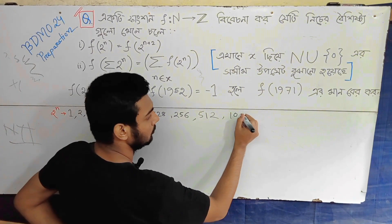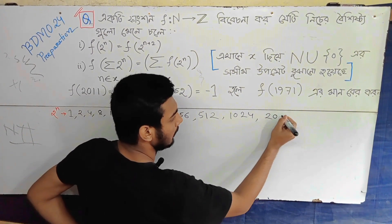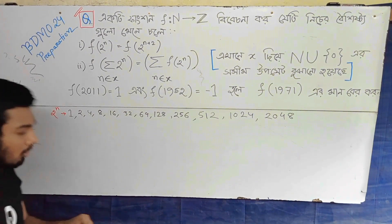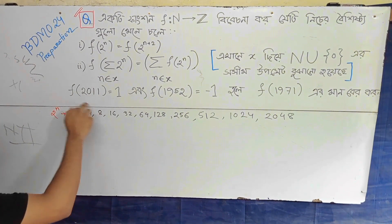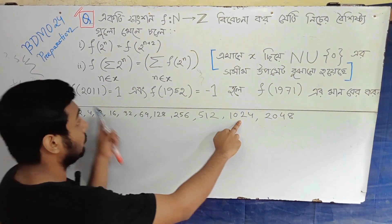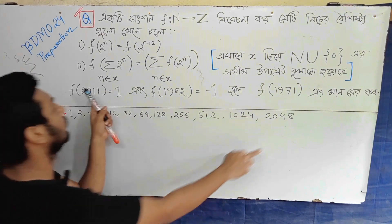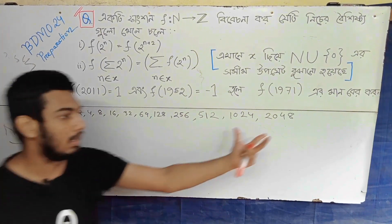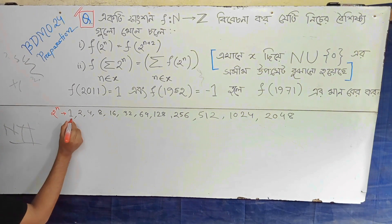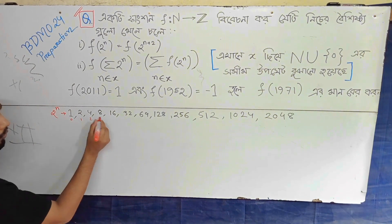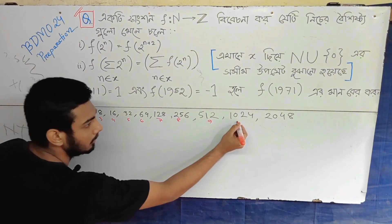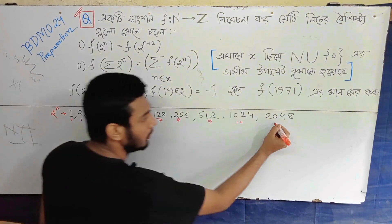This is the power 0, 1, 2, 3, 4, 5, 6, 7, 8, 9, 10, and 2 to the power 11.